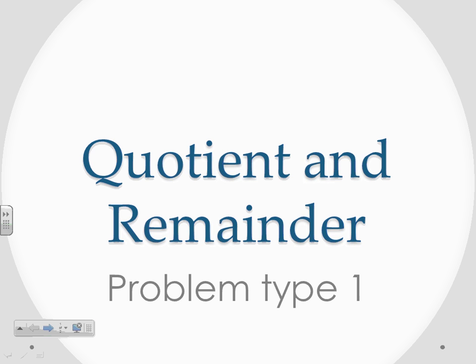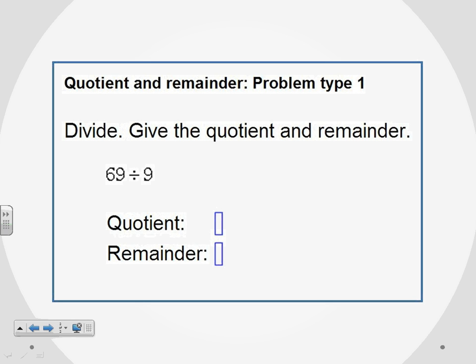Our example here is to divide and give the quotient and remainder. We're asked to divide 69 by 9.